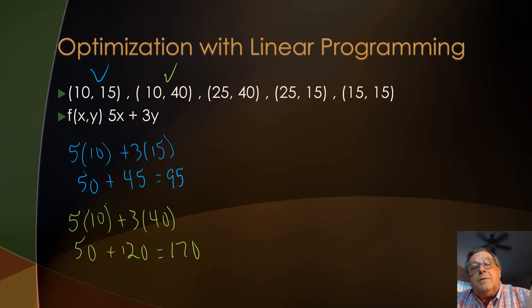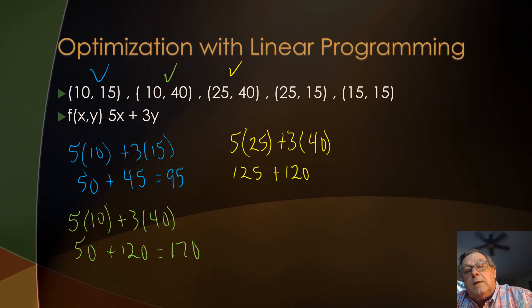We got 2 of them out of the way. Let's try this one here. The 25 and 40. Well, we got 5 times 25 plus 3 times 40, and 5 times 25 is 125 and 3 times 40 is 120 and so that's going to equal 245. And so what do we say we test this one here so we'd have 5 times 25 plus 3 times 15.